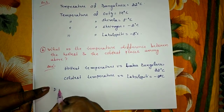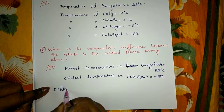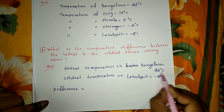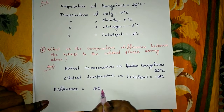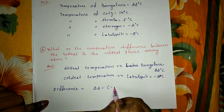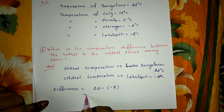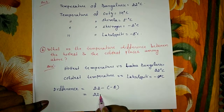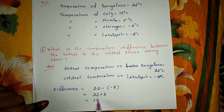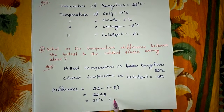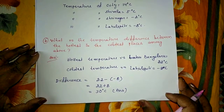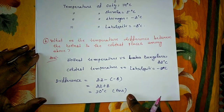So difference equals hottest minus coldest, that is 22 minus minus 8 degree. Since minus minus is plus, this equals 30 degree Celsius. So the temperature difference between the hottest and coldest temperature is 30 degree Celsius.